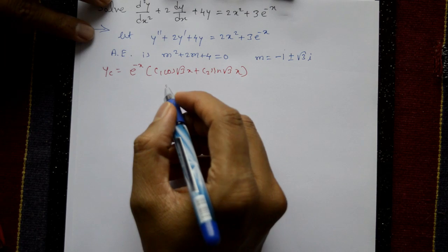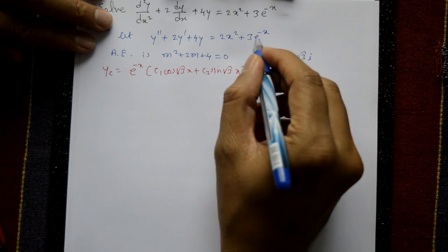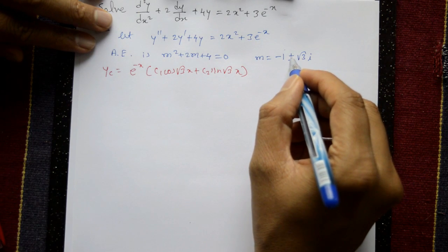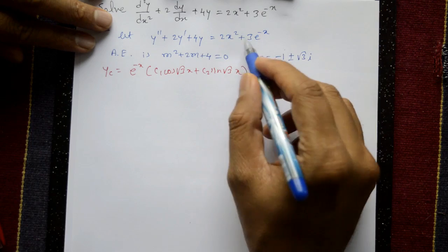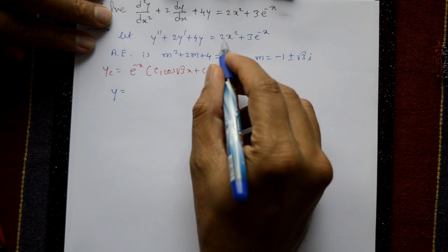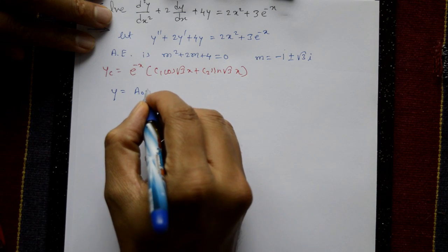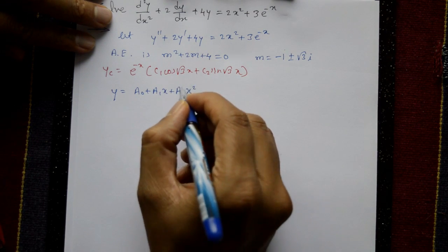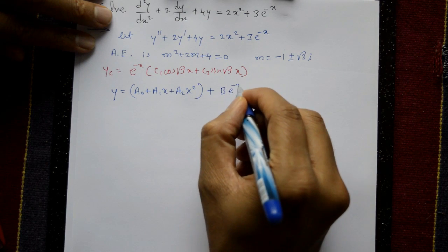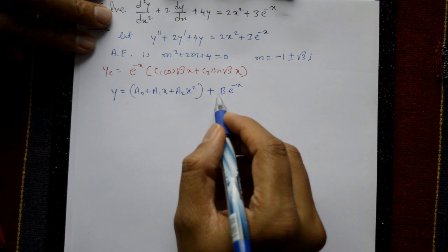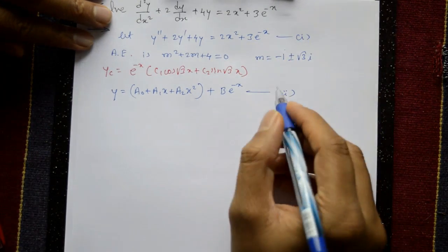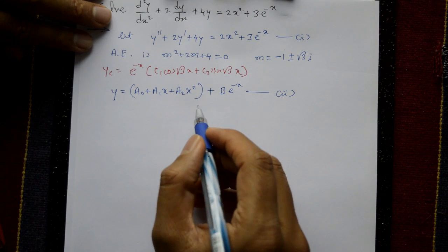Next we need the particular integral. The right-hand side has two parts: 2x² and 3e^(-x). Since these roots don't appear in φ(x), we assume yp = (a₀ + a₁x + a₂x²) + Be^(-x), where a₀, a₁, a₂, and B are undetermined coefficients.